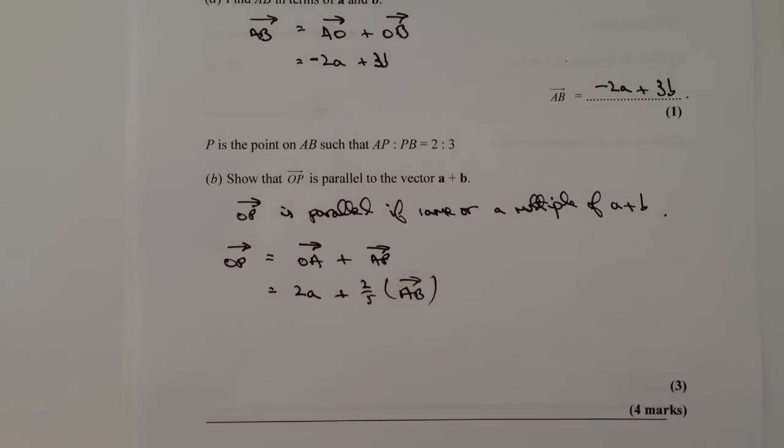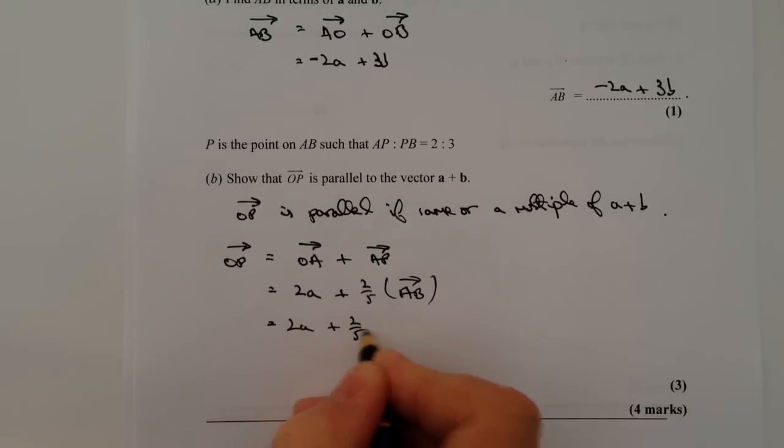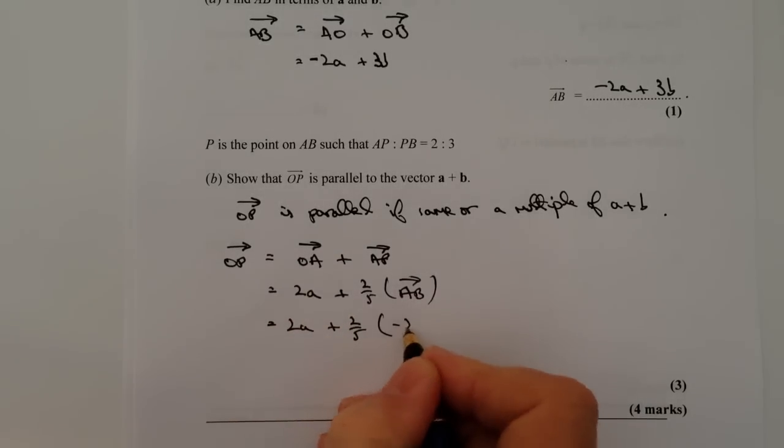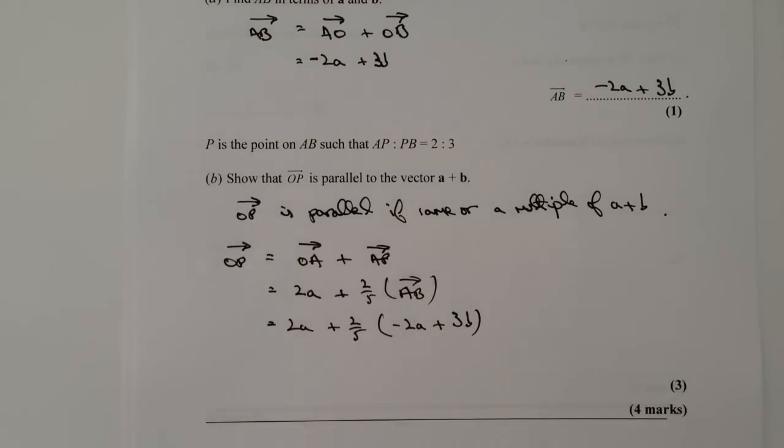OK, well, let's just plug some numbers in there and see what happens. So we end up with 2a plus two fifths. And in brackets, I'm going to put minus 2a plus 3b. And then really, you've answered the question. It is just a case of working this through.